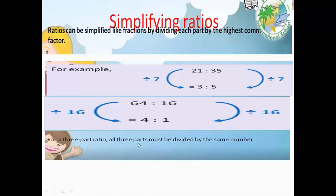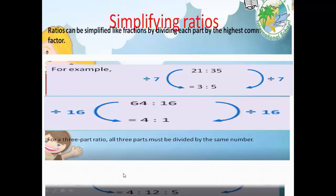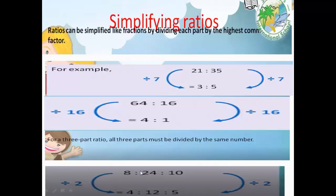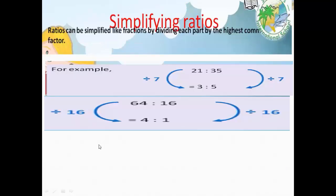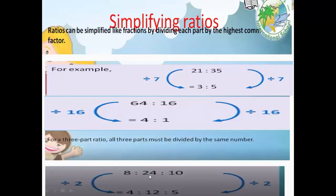For a three-part ratio, all three parts must be divided by the same number. For example, 8 to 24 to 10. The highest common factor is 2. Eight divided by 2 equals 4. Twenty-four divided by 2 equals 12. Ten divided by 2 equals 5. The simplified ratio is 4:12:5, and there is no higher common factor between them.